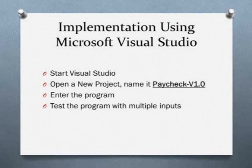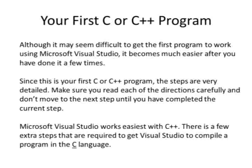The steps are: one, start Microsoft Visual Studio; two, create a project called Paycheck-V1.0 with no spaces — the V1.0 stands for Version 1.0; three, enter the code and make it work; four, test with multiple inputs. Although it may seem difficult to get the first program to work using Microsoft Visual Studio, it becomes much easier after you've done it a few times. Since this is your first C or C++ program, the steps are very detailed. Make sure you read and follow each of the directions carefully and don't move to the next step until you've completed the current step.